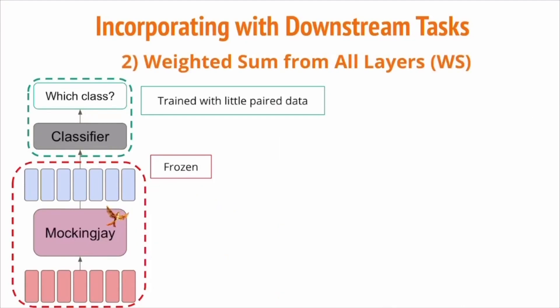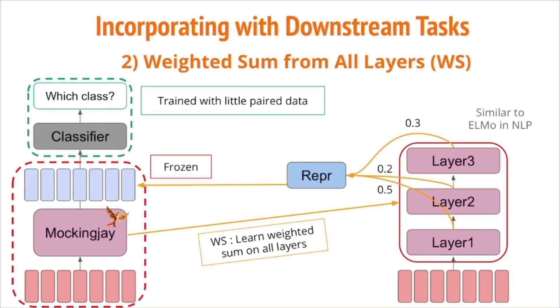The second case: we extract features from all layers. In other words, we expose the deep internals of Mockingjay to downstream models. Same as the previous case, we have a frozen Mockingjay model, but instead of using the last layer's hidden state, we use the hidden states of all layers. All the hidden representations from all layers are integrated into a new representation through weighted sum, where all the weights are learned from data. We denote this approach as WS in later experiments.